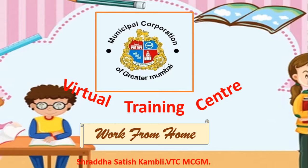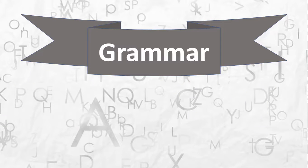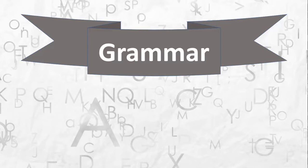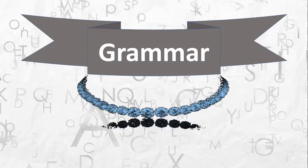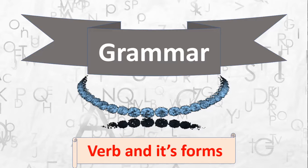Today we will look at a grammar point — we will learn some grammar from your textbook. Most of the grammar we do is textual grammar, that is grammar which is part of your lessons in the textbook. Recently we did a lesson in two parts — the lesson 'The Necklace' — and in that particular lesson we have a grammar point: verb and its forms, which is a very important part of learning English grammar.